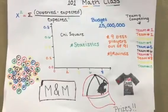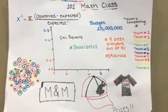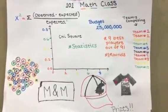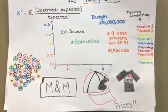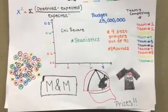We also played a game for baseball. We had to choose nine best players out of 91 for nine rounds with ways to win two prizes, either a hat or a shirt.